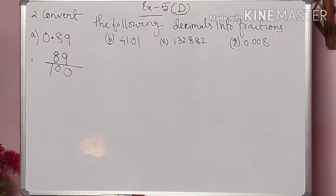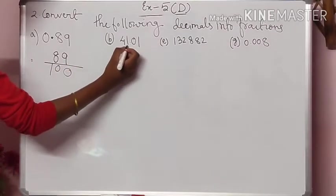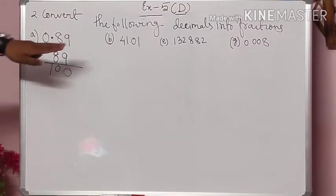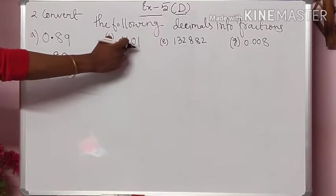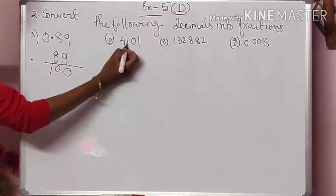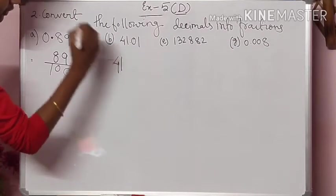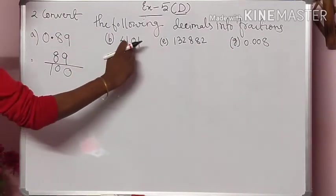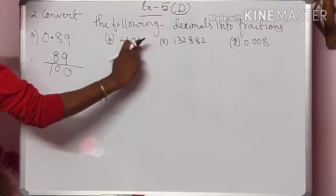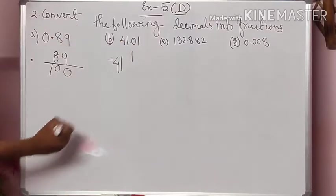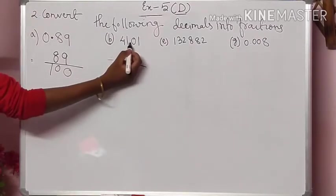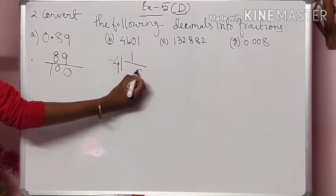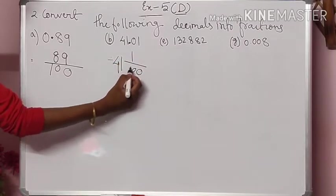If you have any doubt, just ask me. Now for number B, 41.01 is given. The number 41 is on the left-hand side of the decimal — decimal numbers are always on the right-hand side of the decimal point. So 41 will be written directly. After that, 01 means 1 only, so I have written 1 as the numerator. I give a dividing bar and after the decimal there are two numbers, so there will be two zeros, giving us 41 and 1 by 100.